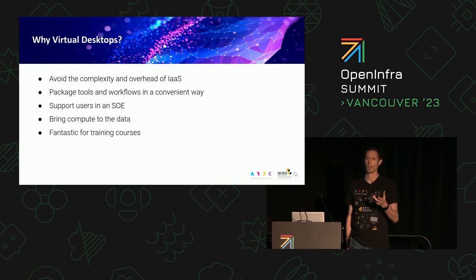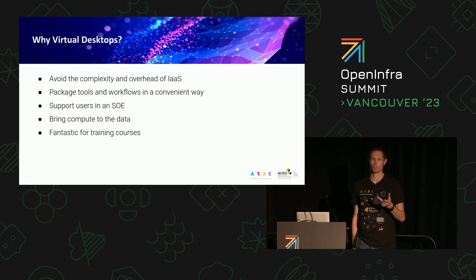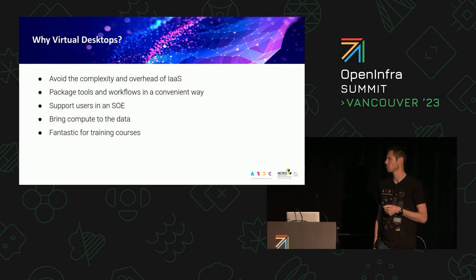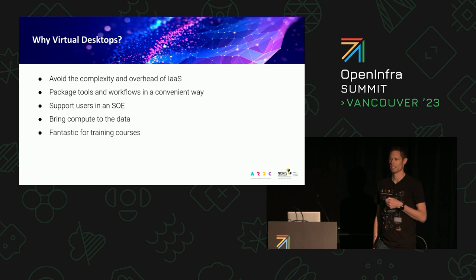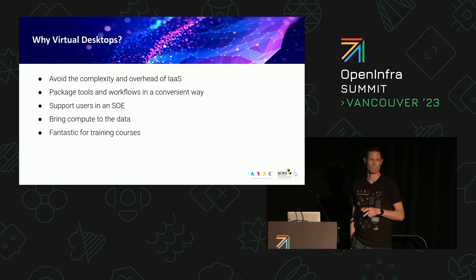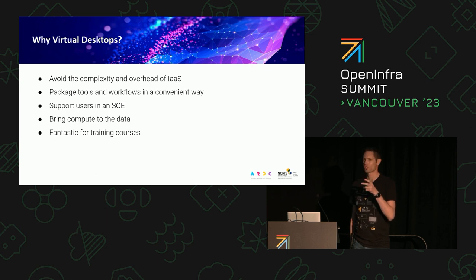We've been operating a research cloud for about 12 years, doing infrastructure as a service and offering lots of services. But one thing that often came back from feedback was that Horizon is kind of complex — there's a lot of things in there, it can be quite daunting. A lot of users don't need that complexity or that power. They just need something they can use — they know the tools they want, they just don't always have the means to get to them easily.